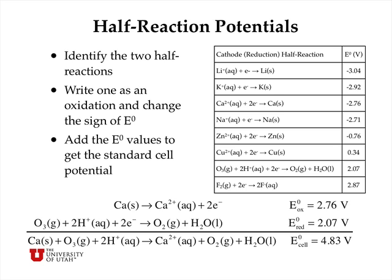The oxidation potential, instead of being minus 2.76 volts, is plus 2.76 volts. The ozone is being reduced, and I find that directly in the table, and so I write its reduction potential as 2.07 volts. The overall reaction is now just the sum of the balanced reactions, including the electrons, which have to cancel, and so the overall cell potential is the sum of the oxidation and the reduction potential, which in this case is 4.83 volts.